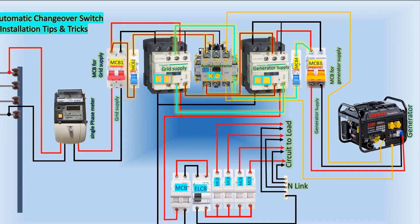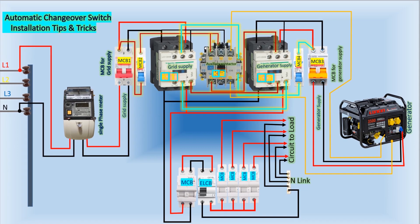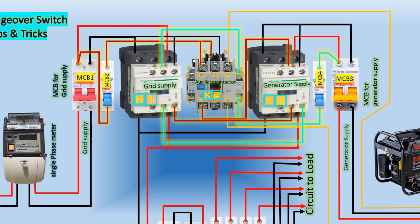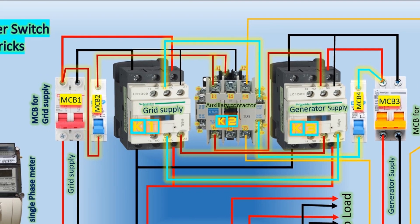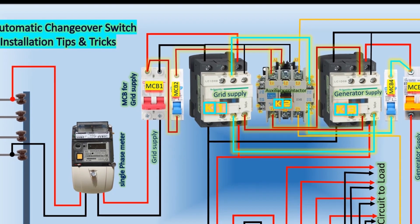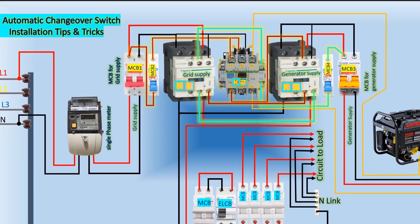When the main power supply is functioning normally, the ATS keeps the load connected to it while isolating the backup power source. However, in the event of a power failure, the ATS detects the change and initiates the switching process. It quickly opens the contact with the main power supply and, by starting the generator, activates the backup power source. If the generator is started, the K3 contactor operates and the generator power is connected to the load. If the grid supply returns, the ATS automatically reconnects the load to the grid supply, disconnecting the generator supply and turning off the generator.